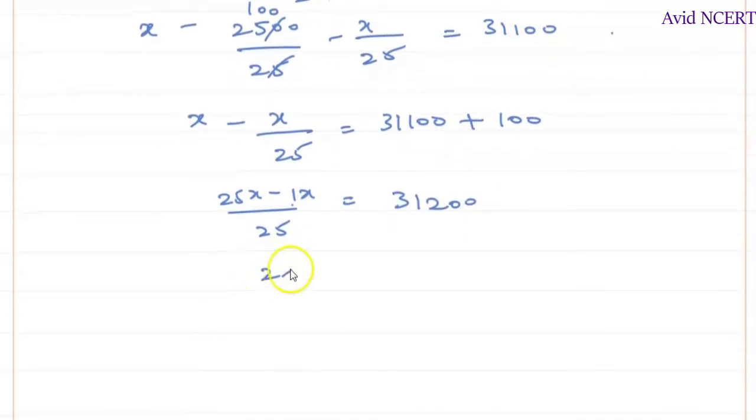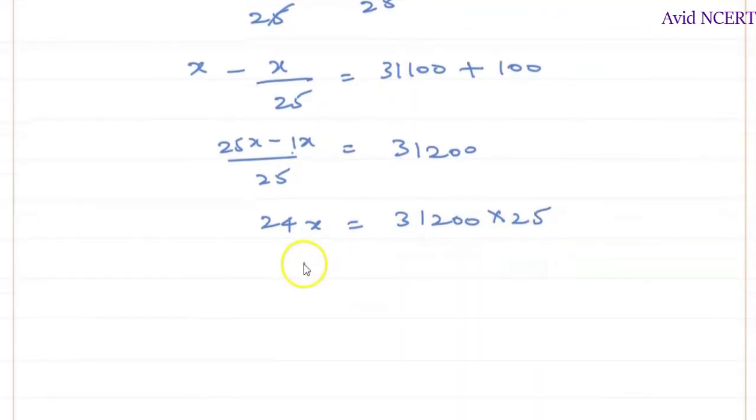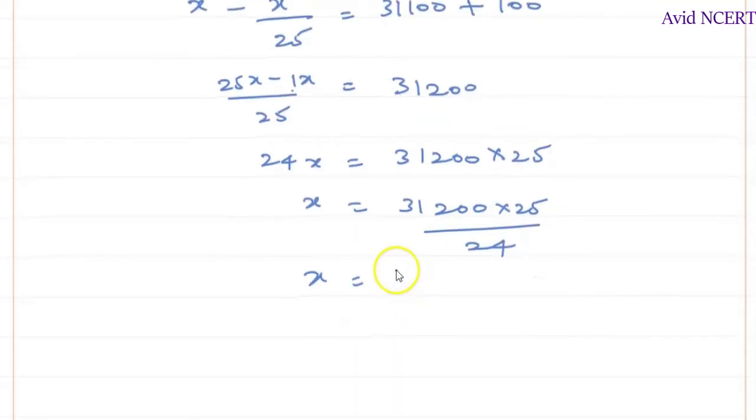So 24x equals, 25 goes on the other side, 31,200 times 25. So x equals 31,200 times 25 divided by 24. We can simplify this to get the answer which is x equals 32,500.